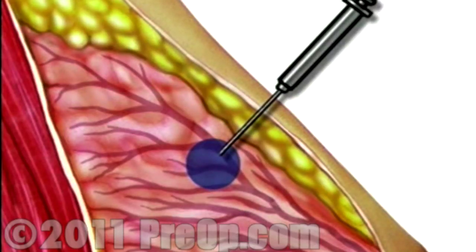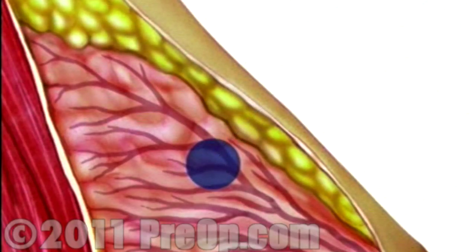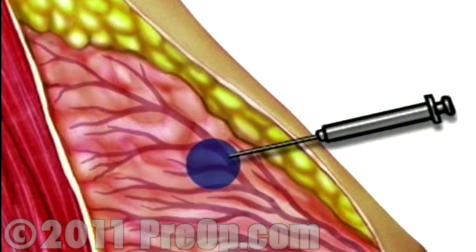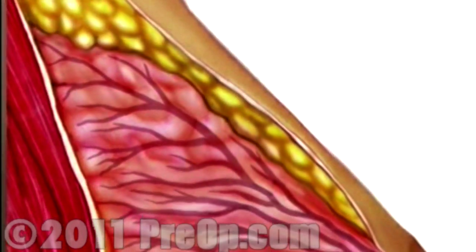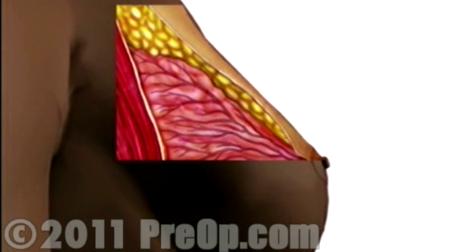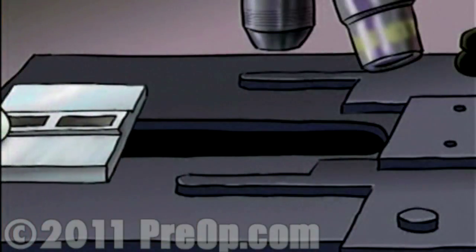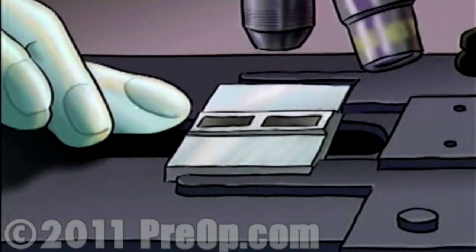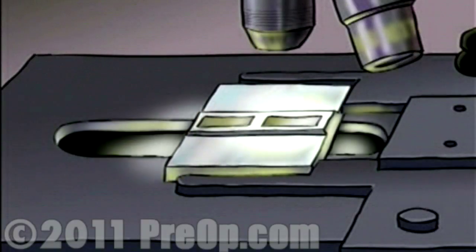Once the tip of the needle has penetrated the lump, the doctor will draw material from the lump up into the collection chamber. Depending on the size and location of the lump, your doctor may choose to reposition the needle and draw additional tissue for analysis. Finally, a sterile dressing is applied. Your specimen will be sent immediately to a lab for microscopic analysis. Your doctor will tell you when to expect results from those tests.